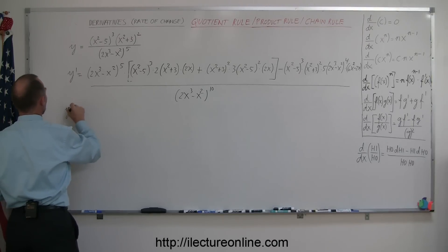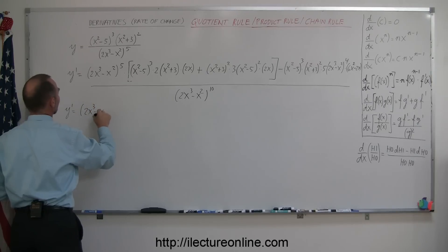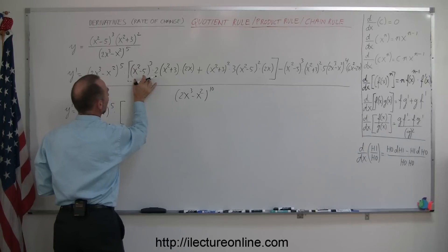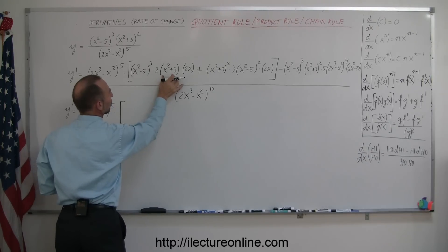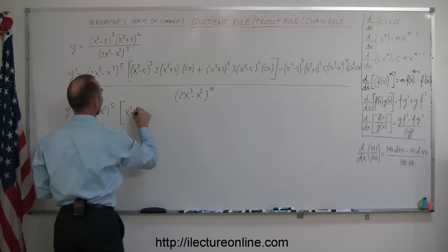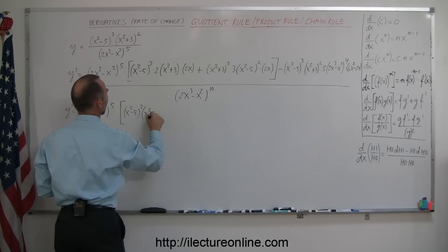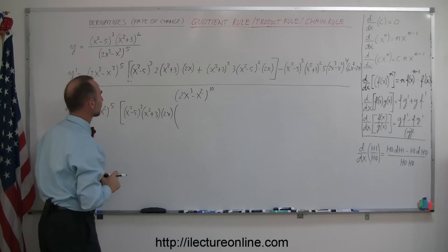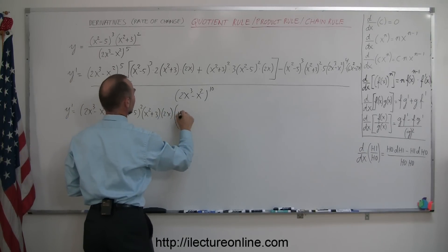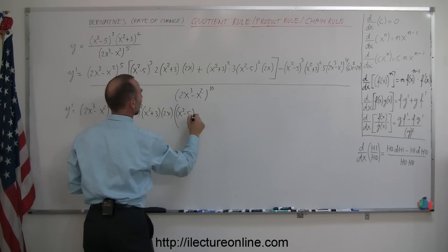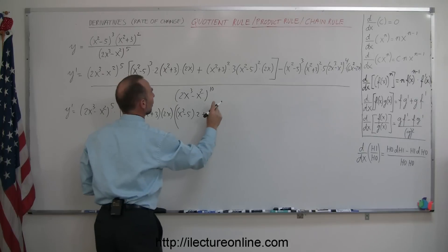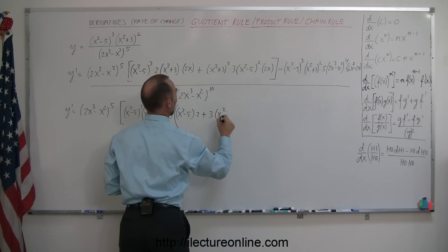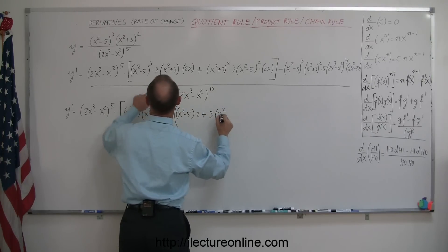Let's do it one step at a time. So y prime is equal to 2x cubed minus x squared to the fifth power, times — now what's in the brackets — let's factor out what's common. We can factor out a 2x, an x squared minus 5 to the second power, and an x squared plus 3 to the first power. That's x squared minus 5 to the second power, x squared plus 3 to the first power, and 2x — all factored out. Then we have left: an x squared minus 5 to the first power times 2, plus 3 times x squared plus 3.